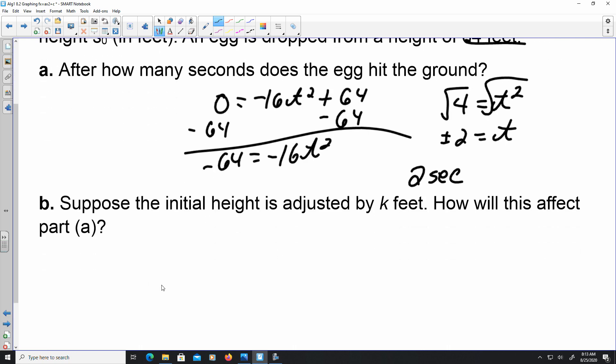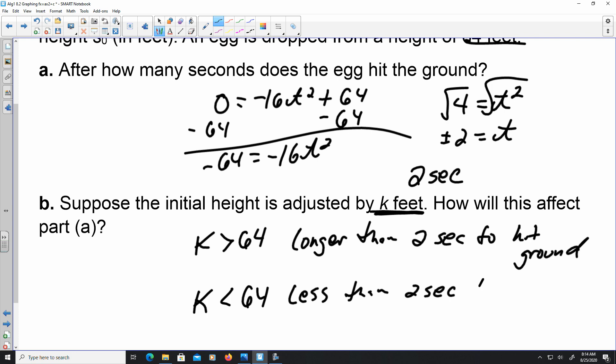Here they're saying, suppose the initial height is adjusted by k feet. How would this affect part a? So they don't give you a value in a sense, but think about this. Let's say k was greater than 64 feet. If k was greater than 64 feet, it would take longer than two seconds to hit the ground, more than two seconds to hit the ground. And if k was less than 64 feet, it would take less than two seconds to hit the ground.